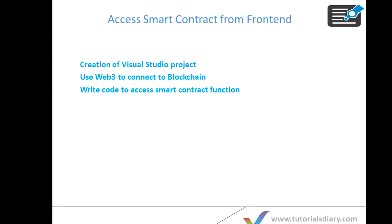Hello everyone, welcome to Tutorials Diary. This is lesson 6 of the Ethereum development course for beginners. If you haven't gone through my last 5 videos, I recommend you go through those first. In those sessions we covered how to set up your development environment for Ethereum, how to build smart contracts in Remix IDE, how to compile them, and how to deploy on different blockchains. In this lesson 6, which is also our last session, we'll show you how to access smart contract functionality through the front-end using web3.js.